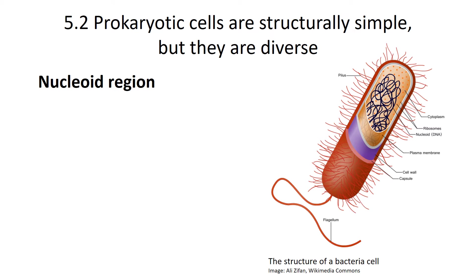Prokaryotes lack a cell nucleus — an area where they contain all of their DNA surrounded by a membrane. But what they do have is a nucleoid region, and inside that nucleoid region you can find all of the DNA for a bacteria cell. Also, the bacteria has about 10 times less DNA than you would find in a eukaryotic cell.